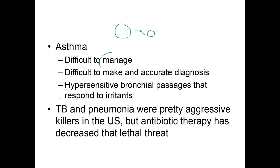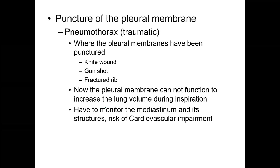Tuberculosis (TB) and pneumonia are diseases that can affect the lungs. These were pretty effective killers until antibiotics decreased deaths from them. You can still die from them, but we have better techniques today for saving patients. If the lung collapses, that's called a pneumothorax — the pleural membrane has been punctured from a knife wound, gunshot wound, fractured rib, or can even be spontaneous. The pleural membrane cannot function to increase lung volume during inspiration, so the lung starts to collapse.